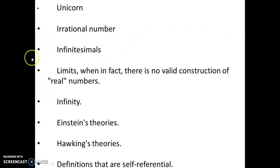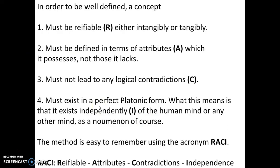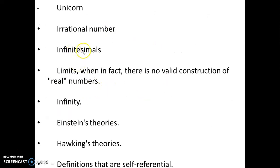The next part I'd like to talk about is besides being reifiable and possessing the attributes, it must not lead to any logical contradiction. If you take a look at infinitesimals, that leads to so many contradictions. For example, Euler stated that one divided by infinity is equal to zero. That is such utter rubbish. Basically what it says is that if you had infinitely many zeros and you added them all up, you'd get one. Once you get a logical contradiction, then you can know for certain that your concept is junk.